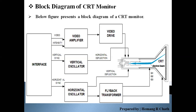The video information from the computer is used for turning the beam on or off at the appropriate place when the beam scans the screen, in order to produce the correct image.